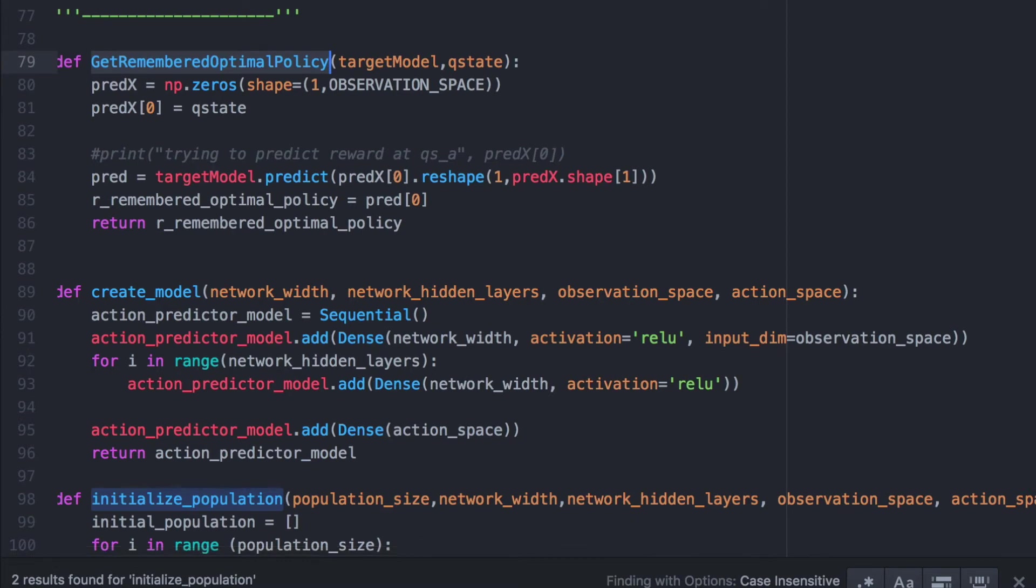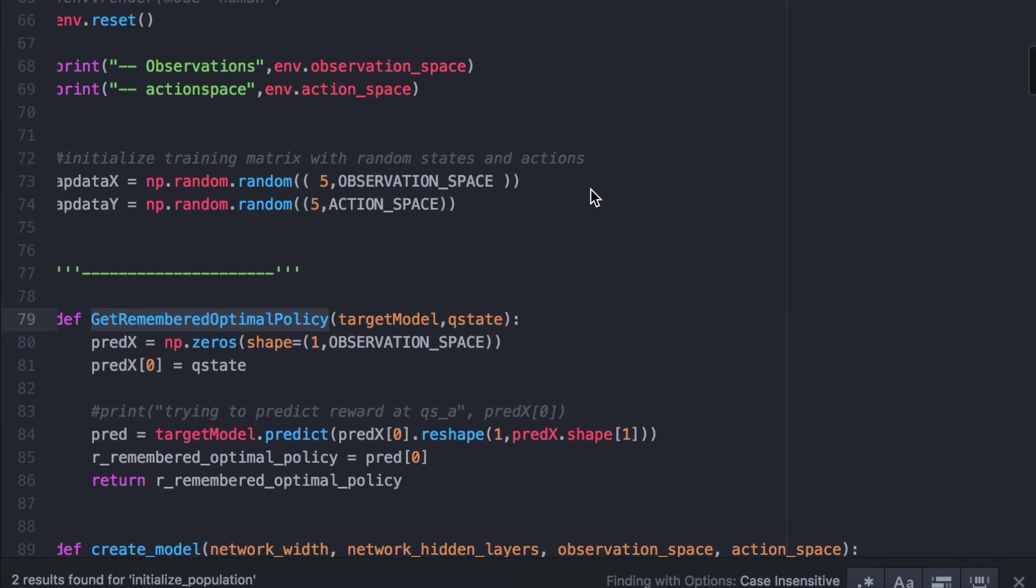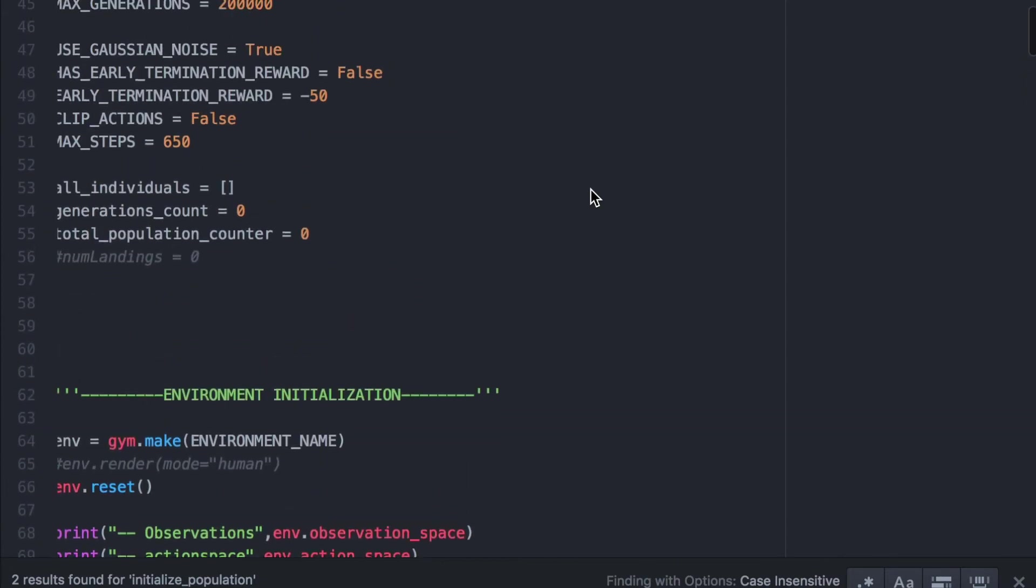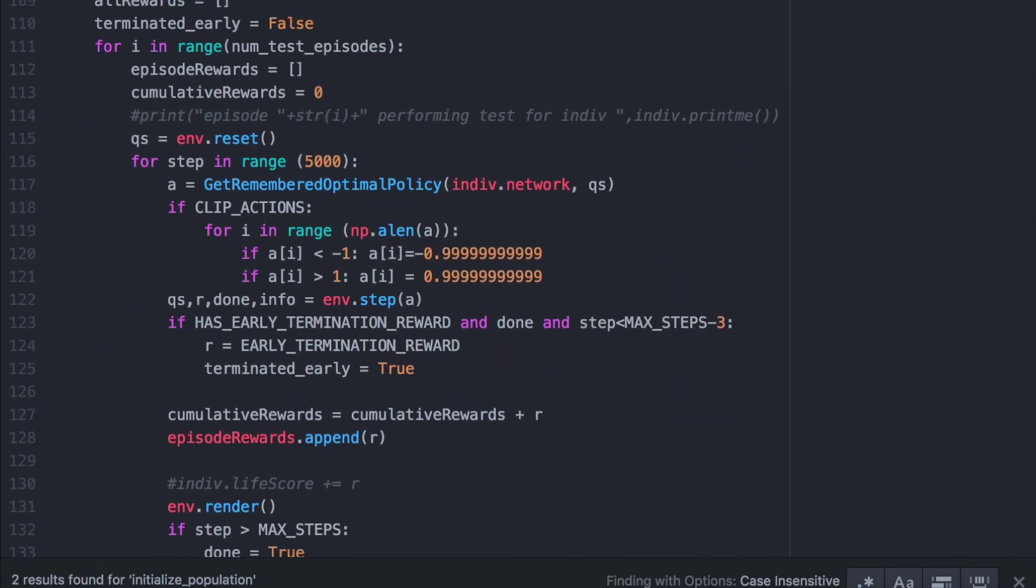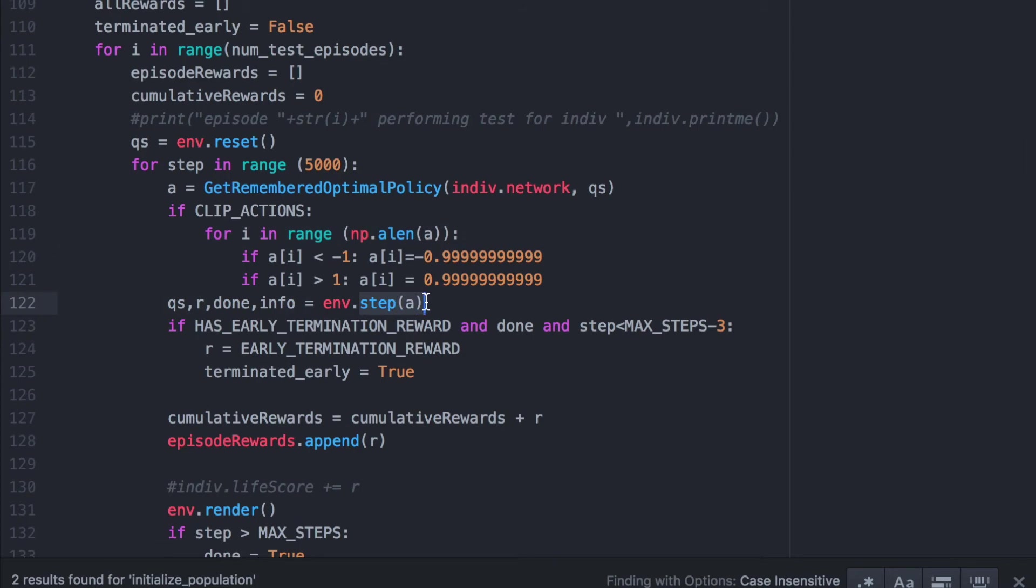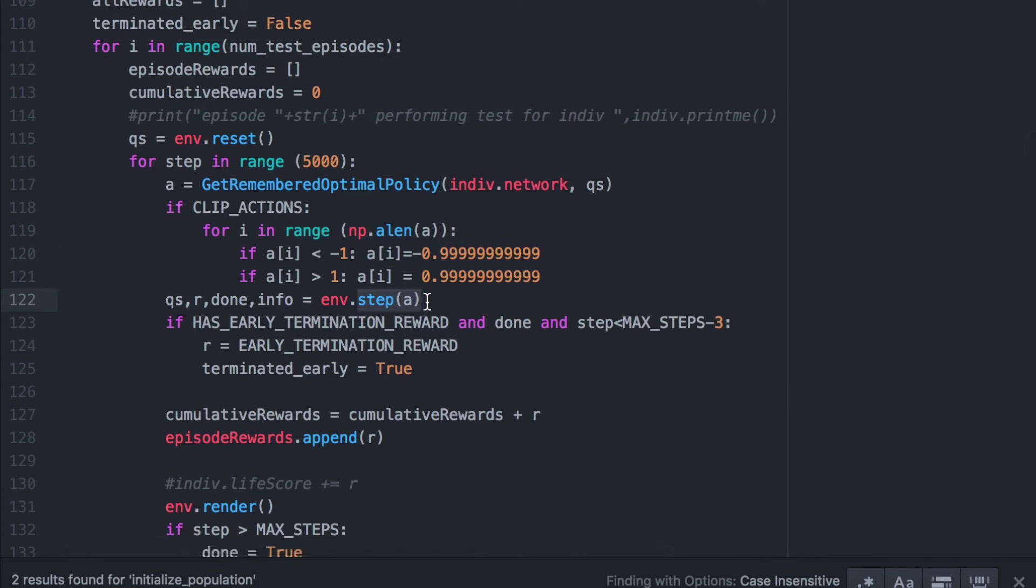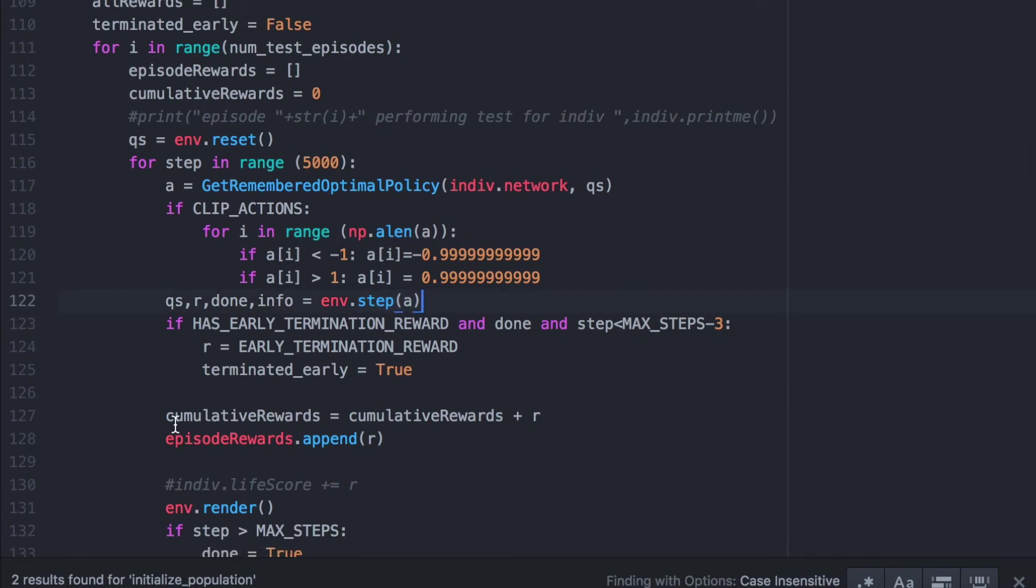We will also create a function to test each individual and obtain their fitness score. Thanks to OpenAI's simple interface, we can pass the action that each individual thinks is more appropriate with a simple environment.step. This will return the next state of our environment. Meanwhile, we also collect all rewards in the cumulative reward variable. We will average all rewards and assign that value as the fitness score. We repeat this until all episodes for this generation is over.